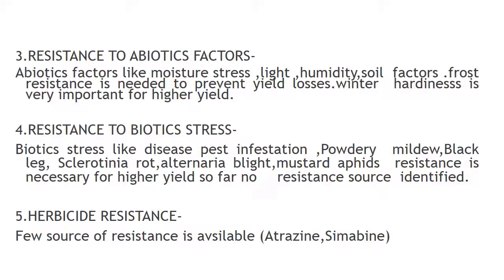The third objective is resistance to abiotic factors. Major abiotic factors are moisture stress, light, humidity, and soil factors. Frost resistance is needed to prevent yield losses, and winter hardiness is very important for high yield. The fourth objective is resistance to biotic stress — diseases and pest infections like powdery mildew, black leg, sclerotinia rot, alternaria blight, and mustard aphid resistance are necessary for higher yield. So far no resistant source is identified. Herbicide resistance: few sources are available, such as for atrazine and simazine. Shattering resistance is also essential; Brassica napus is highly shattering while Brassica juncea is tolerant.